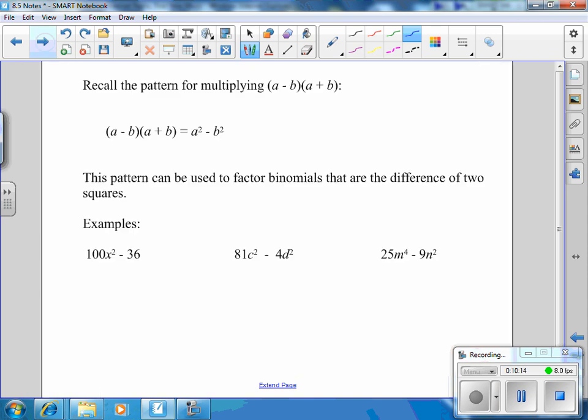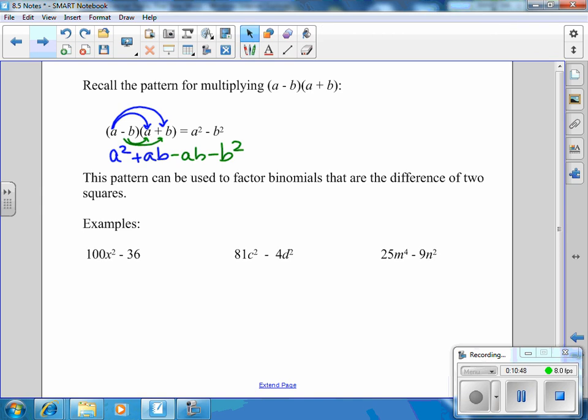All right, one more pattern to notice. And this is when the middle term crosses off. So think back to when we double distributed. If you have the same thing, only opposite signs, your middle terms end up crossing off. So we would do a times a or a squared. Then a times positive b to give me ab. And then we would do negative b times a to give me negative ab. And then finally, negative b times b gives me negative b squared.